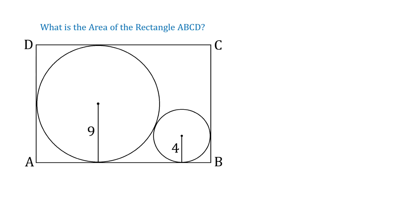To find the area of the rectangle, we need to know the length AB and the width AD. So let's start with the length AB.